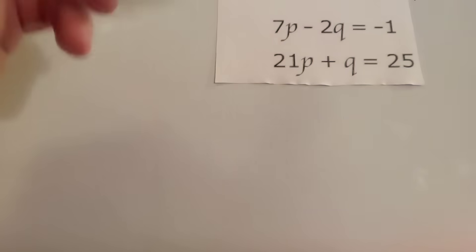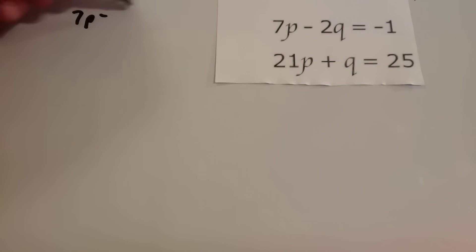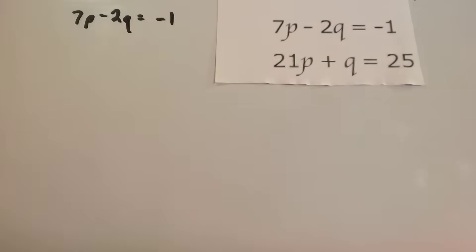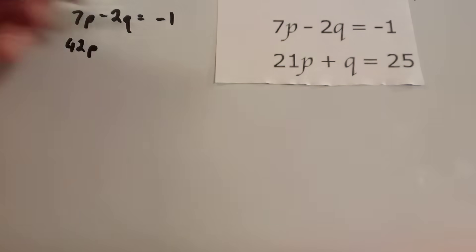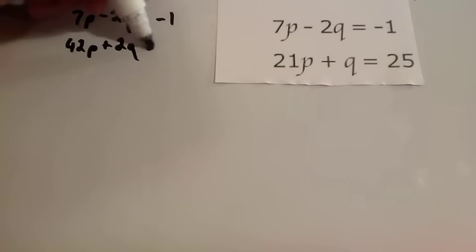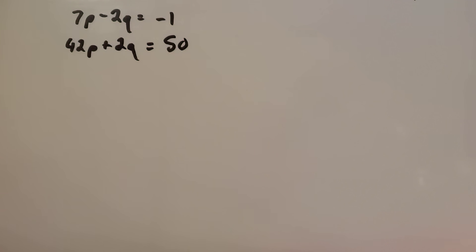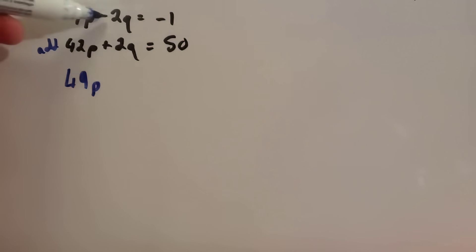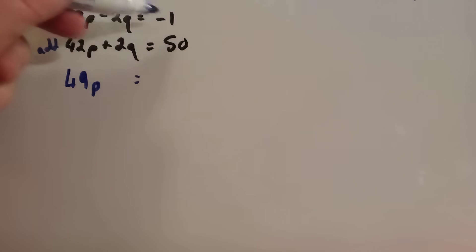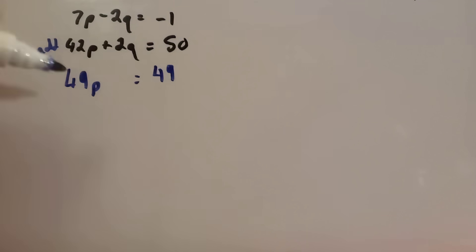Writing it out: the top equation stays as 7p minus 2q equals minus 1. Doubling the bottom equation gives 42p plus 2q equals 50. Now minus 2q and 2q — signs are different, so we add. There's a useful mantra: same signs, subtract; different signs, add. Adding gives 7p plus 42p which is 49p, minus 2q plus 2q is zero, and minus 1 plus 50 is 49. So 49p equals 49, divide by 49 and p equals 1.